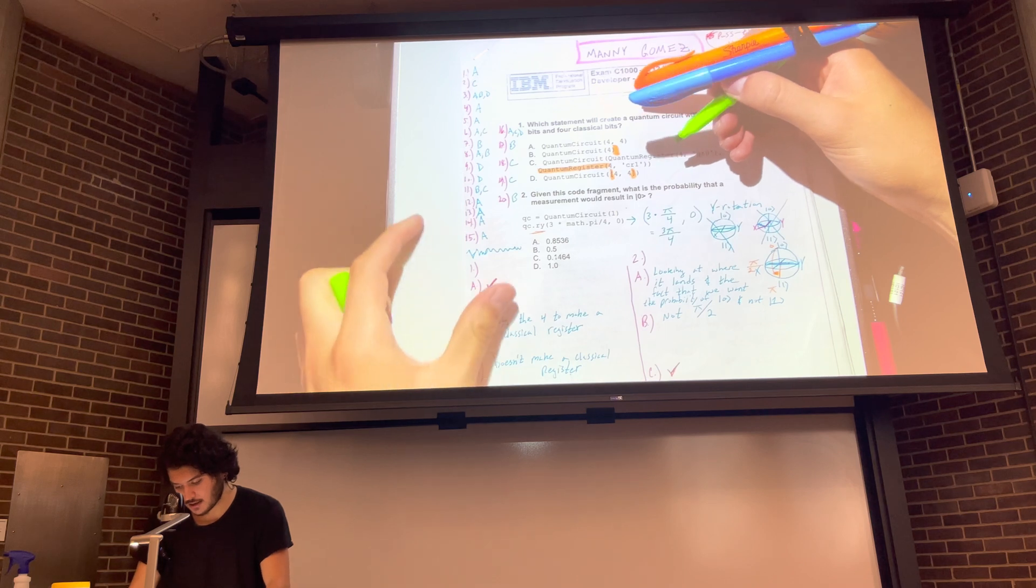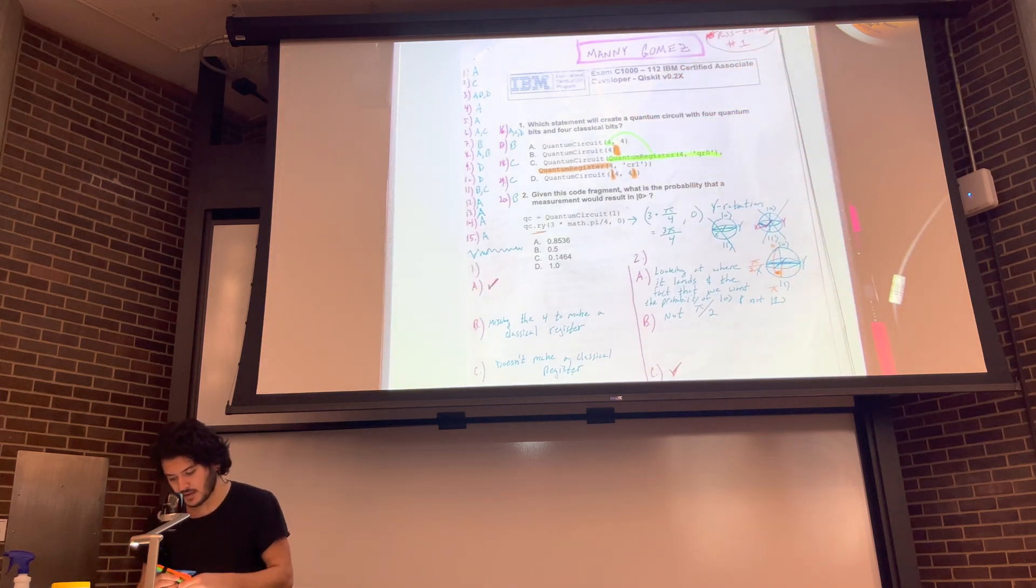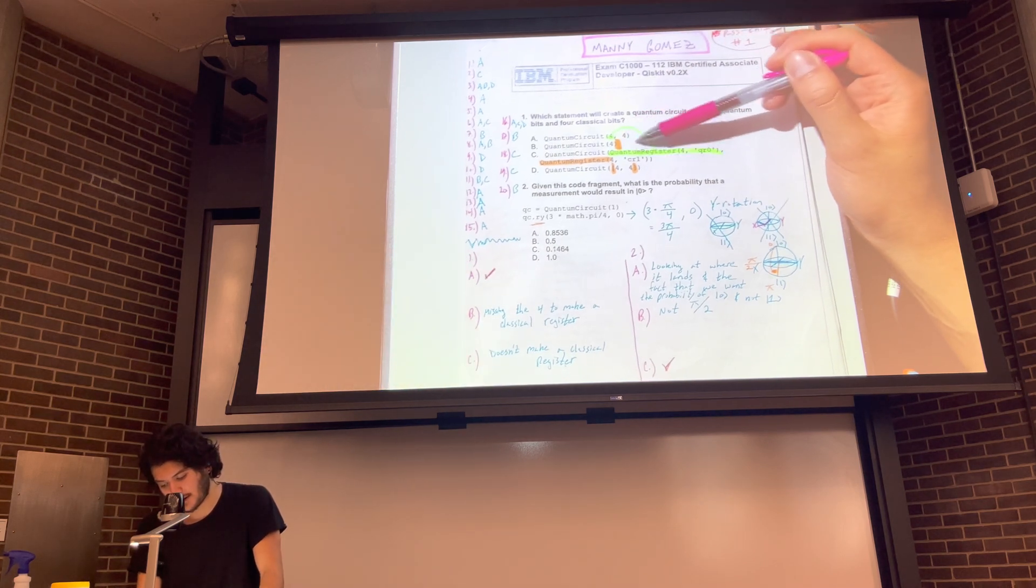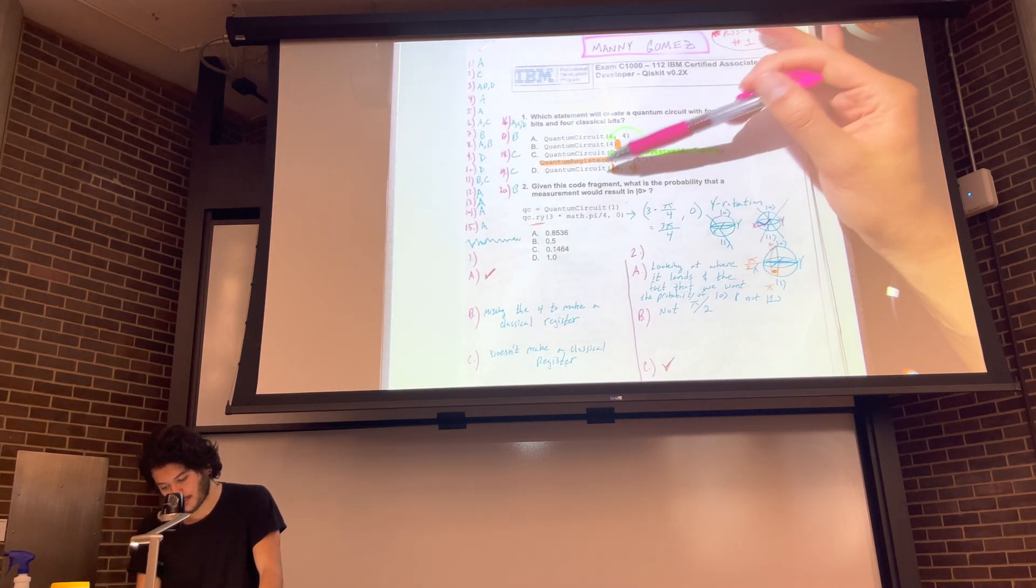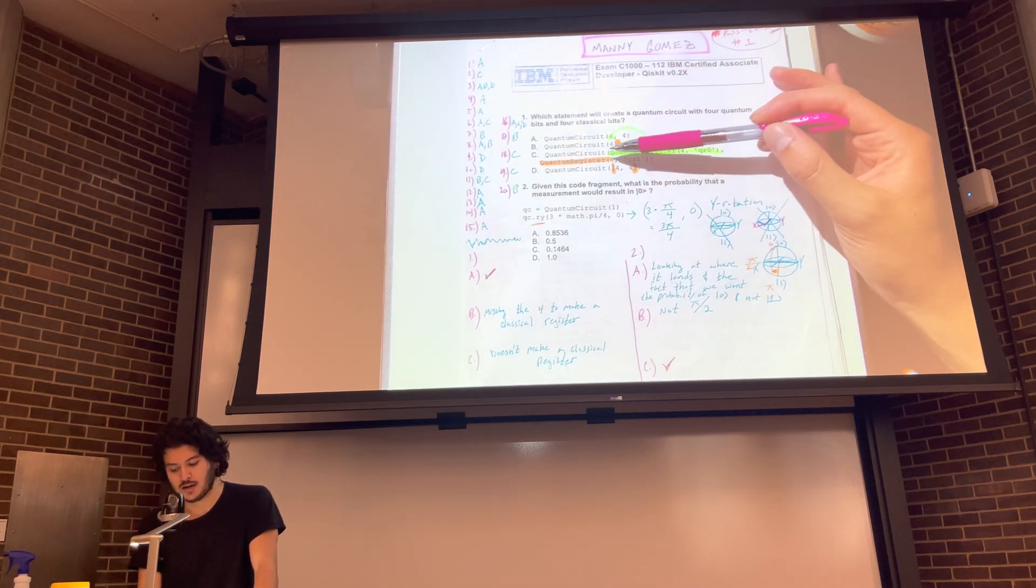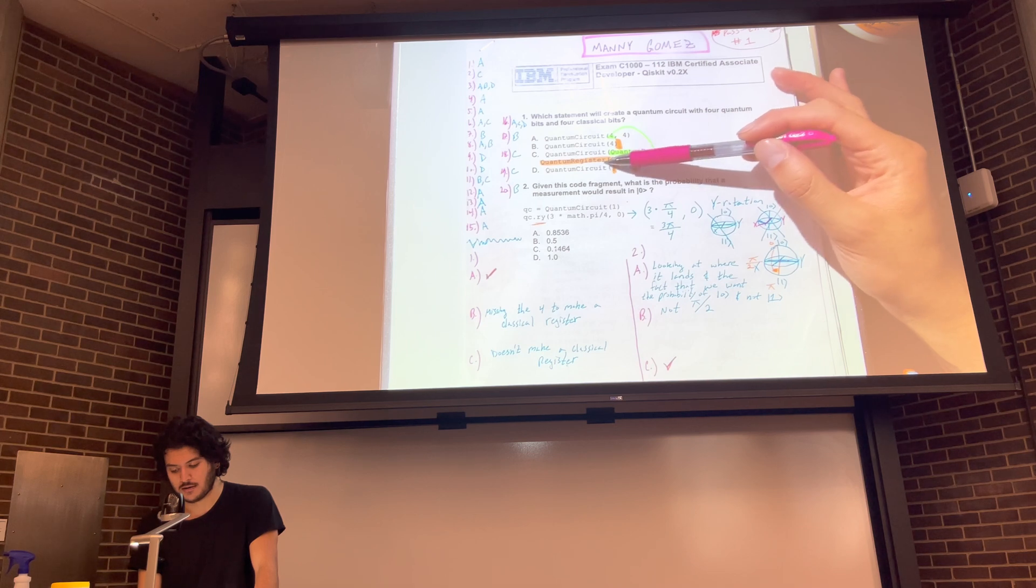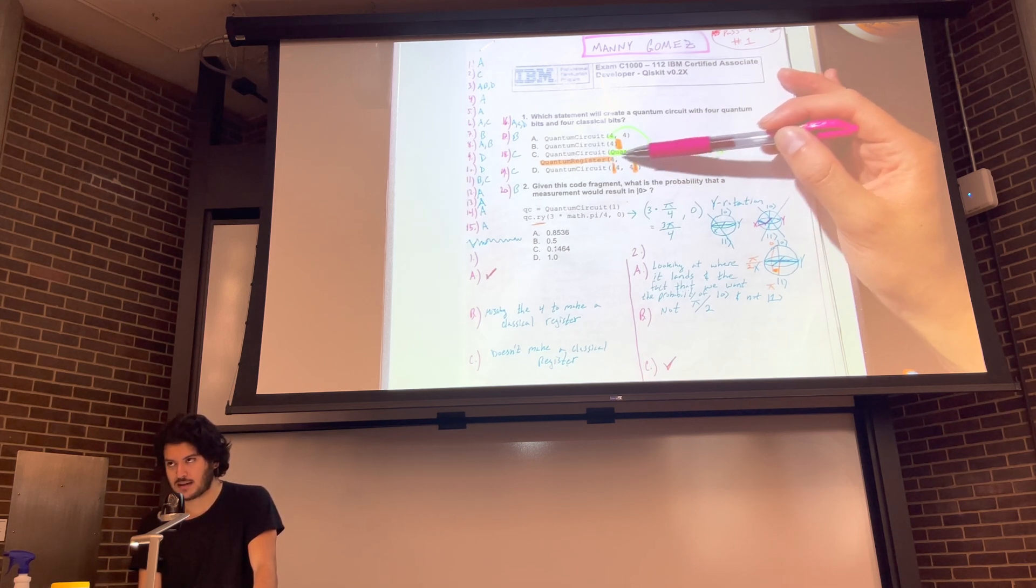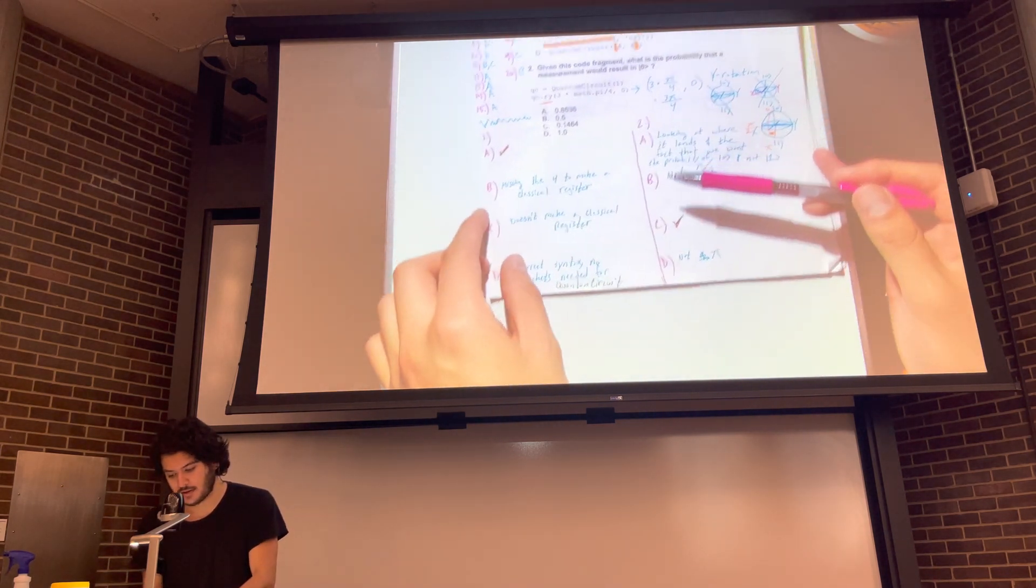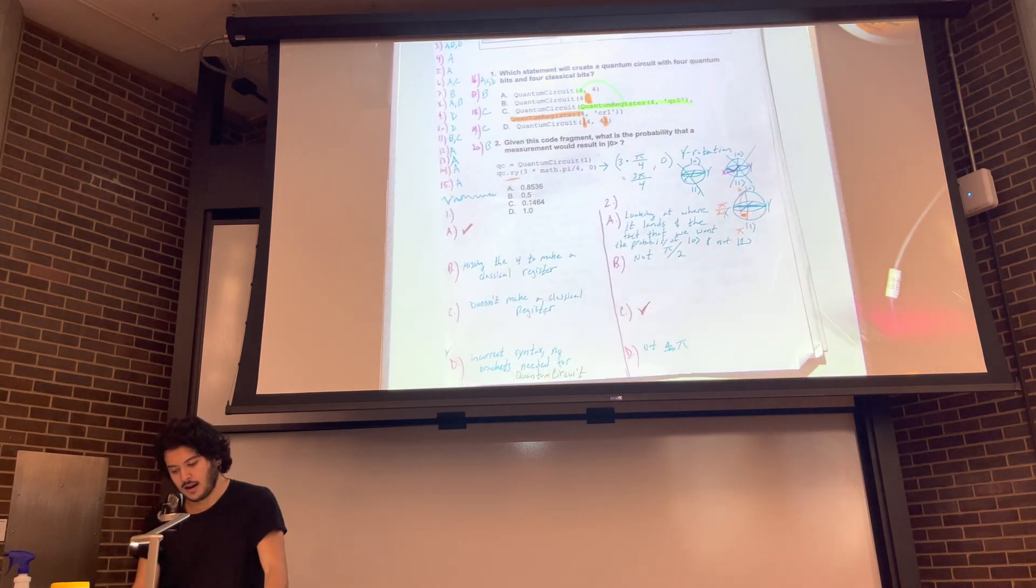So this represents the same thing. But the problem is, we want four quantum bits and four classical bits. And this one creates four quantum bits here, but then it creates four additional quantum bits here. So if this quantum register said classical register, it would be correct. Because then we get four quantum and four classical. But here it's giving us two sets of four bits that are both quantum. So that's not correct. So here we can see why B, C, and D are incorrect.